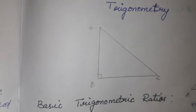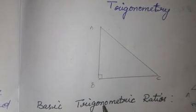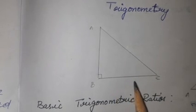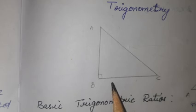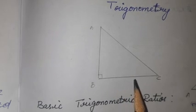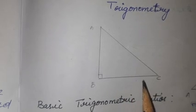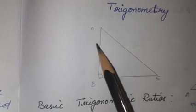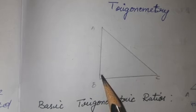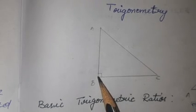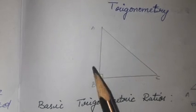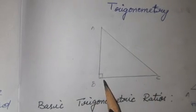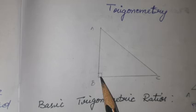Trigonometry is based on a right angle triangle. We have to use only a right angle triangle for trigonometry. I am taking a right angle triangle. Here, angle B is a right angle. The name of this triangle is A, B, C, with angle B being the right angle.